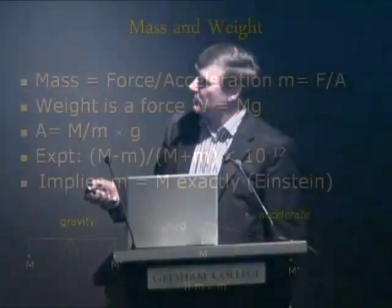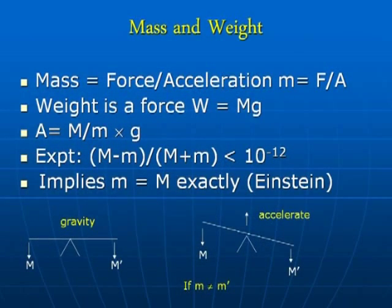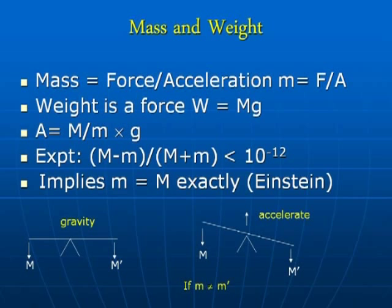Weight is something different. Weight is a force — the force with which the Earth attracts that mass. Technically, that might be a different thing to the mass defined by Newton's second law, so we use a capital M. The force with which an object is attracted towards the centre of the Earth is given by a formula involving this gravitational mass, sometimes called the gravitational mass — and in principle it might be different from the inertial mass.